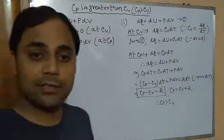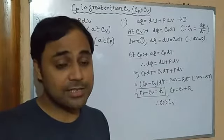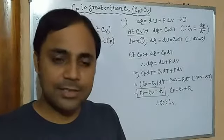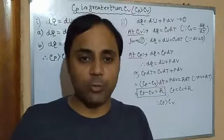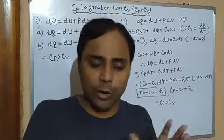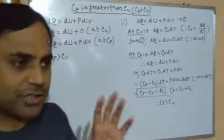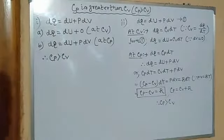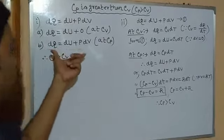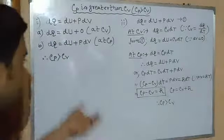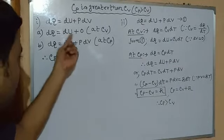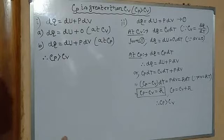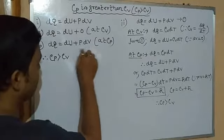Now if the same gas is heated at constant pressure, the volume is not constant. In that case, temperature will also increase, and along with temperature its volume will also increase. Since the change in volume is taking place, the gas will have to do some external work against external pressure. So in this case we get the complete expression: DQ = Du + PdV — some part increases internal energy and the rest does external work due to expansion.